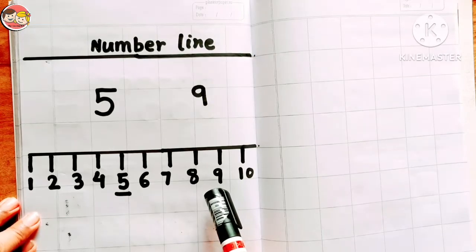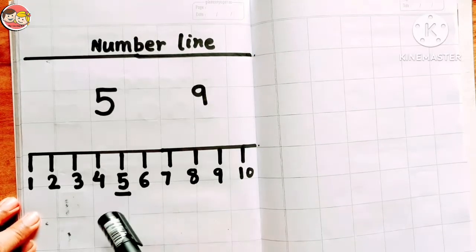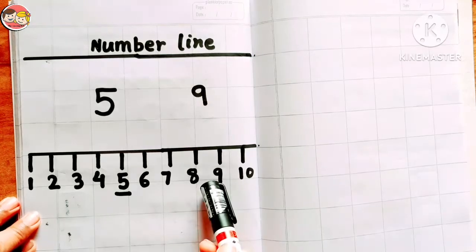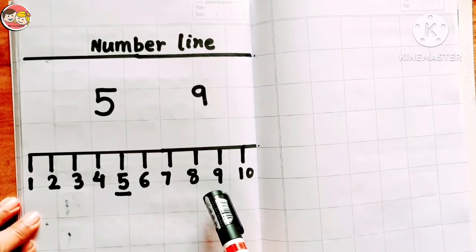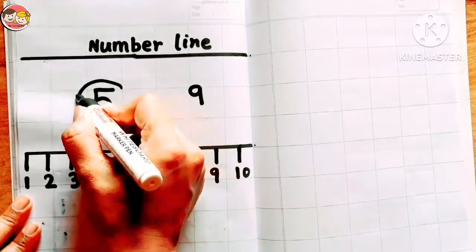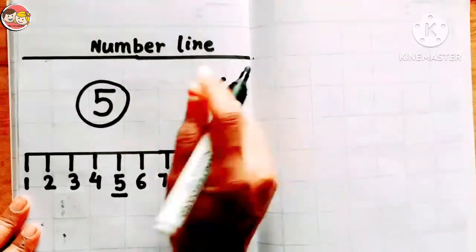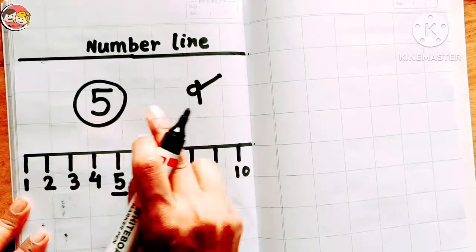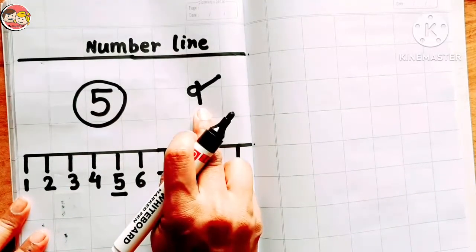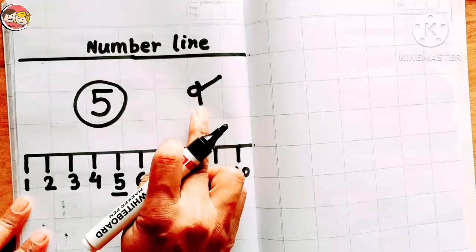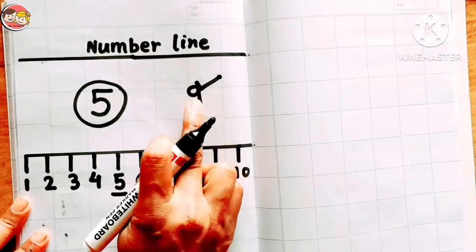So children, the main point is: the number which comes before another number is the smaller number, and the number which comes after another number is the bigger number. Circle the smaller number and tick the bigger number. Number five is the smaller number and number nine is the bigger number — so number five is smaller than number nine, and number nine is bigger than number five.